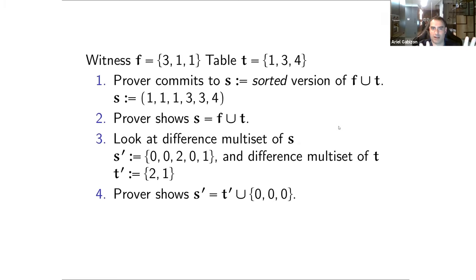How does this compare to the paper? So basically, if our basic unit of cost is this multi-set check, we did here two multi-set checks between S and F union T, and then between the different sets. And what we show in the paper is if you look at randomized different sets, you can actually combine these two checks into one multi-set check.